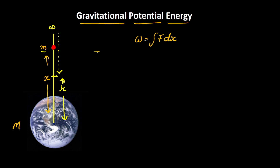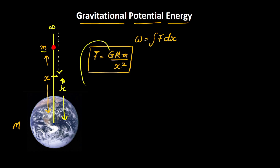In our situation, the force is due to gravity, and that would be G capital M times small m divided by x squared, where capital M and small m are separated by a distance x. So the force of gravitation would be GMm by x squared, where G is the universal gravitational constant, equal to 6.67 times 10 raised to the power minus 11.